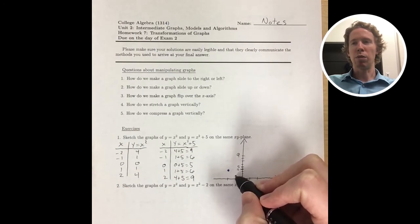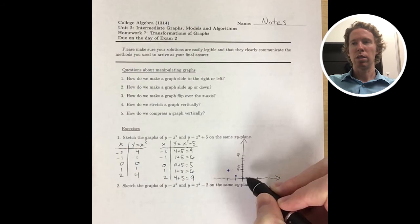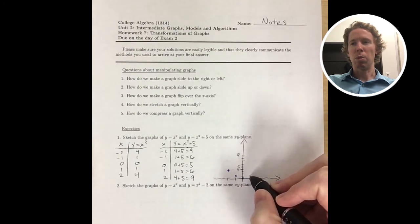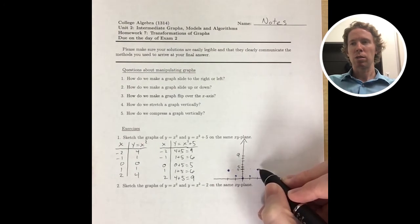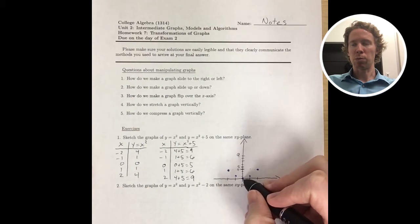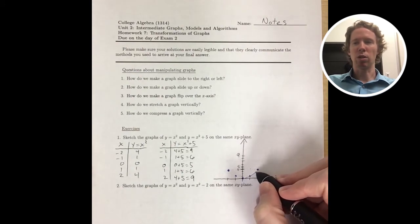We've got points at negative 2, 4, negative 1, 1, 0, 0, 1, 1, 2, 4. So I plot those points and just connect them with a smooth curve. I already know it should look like a parabola.